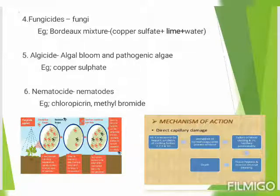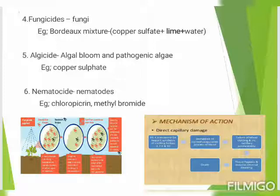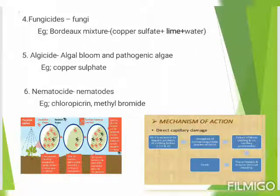Lastly, the important pesticide type is nematicide. These kill nematohelminthes — for example, fluorosucryl and methyl bromide. That ends the classification of pesticides. Now let's see how pesticides are degraded, which will be explained by my fellow teammate Naresh.